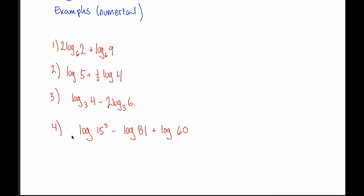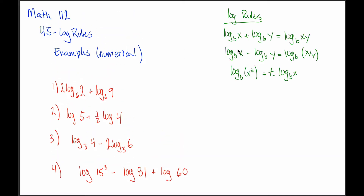Without further ado, we have four examples. The first one says 2 times the log base 6 of 2 plus the log base 6 of 9. It's tempting to use the first log rule — when you have the sum of two different logs you can combine them into a single log by multiplying the arguments — and say 2 times 9 is 18. But that won't work, and the reason you can't use this log rule is this 2 right here. This is not log base 6 of 2 plus log base 6 of 9 — it's 2 times log base 6 of 2 plus log base 6 of 9.